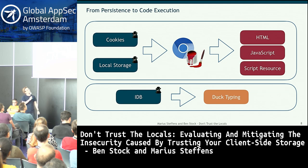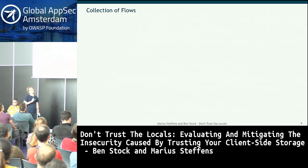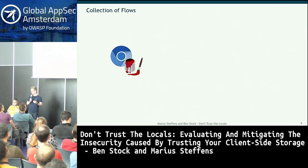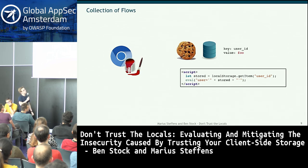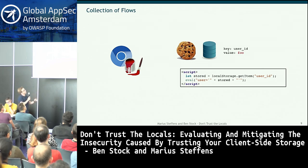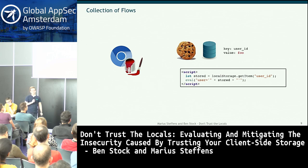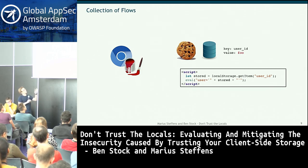For the first analysis using the tainted Chromium, we collect data flows from web pages. A data flow might show an item in local storage with key 'user_id' and value 'foo' being retrieved and passed into an eval call. With this we know we have tainted data flowing from storage into a dangerous sink.